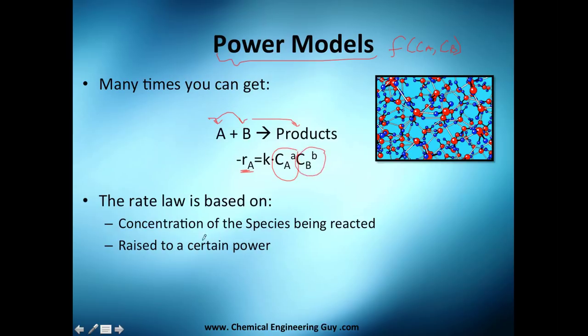The rate law is based essentially on concentration of the species being reacted here and raised to a certain power. Which power? Well, it may be actually any power, but we're going to see in the future the special case in which this A is actually the stoichiometric value of our reactant A and B is the stoichiometric value of our reactant B.